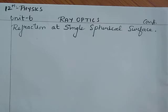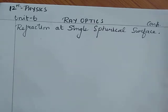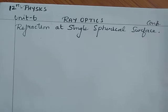A spherical surface is one that will be a part from the sphere. Spherical surface is a part from the sphere — that is nothing but a curved surface. For that curved surface also, the law of refraction will hold.